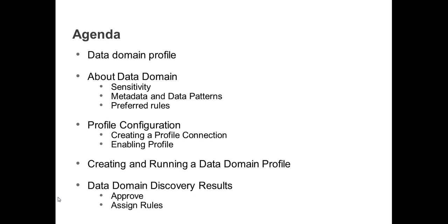The data domain profile identifies the columns that belong to a data domain based on the data value of the column or the column name. A data domain is an object that represents the functional meaning of a column based on the column data or the column name.